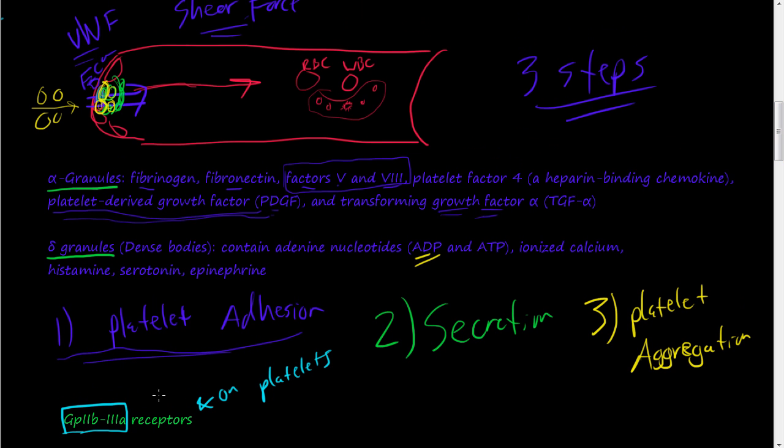So once this ADP starts releasing from these granules, these gamma granules, then those receptors, these GP receptors on these platelets start changing to allow them to bind to fibrinogen. And fibrinogen is also being collected on this plug here.